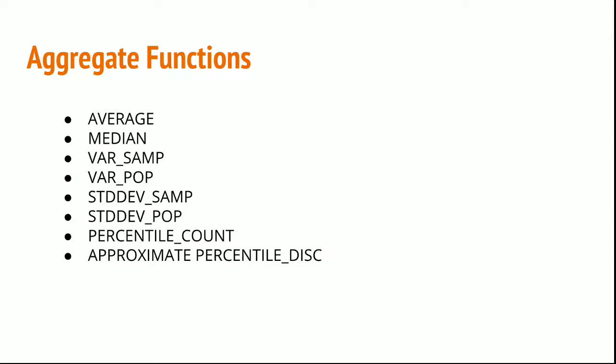Apart from the discussed functions, there are various other functions like average, median, variance, sample variance, population standard deviation, sample standard deviation, population percentile, COUNT, and approximate percentile. We actually use COUNT, MIN, MAX, and LIST_AGGREGATION more compared to the others, so we discussed them in detail. You can find examples related to the remaining functions in the AWS documentation. Thank you.